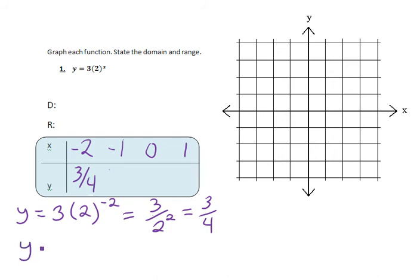Our next x value, negative 1, when substituted into the original equation, gives us y equal to 3 times 2 raised to the negative 1 power. Again, we have a negative exponent, so we bring that to the opposite side of the fraction bar, and end up with 3 over 2 raised to the first power. Anything raised to the first power is simply itself, so we have 3 halves.